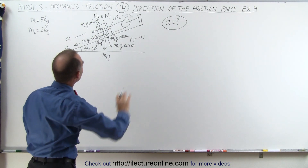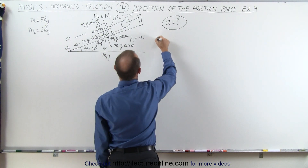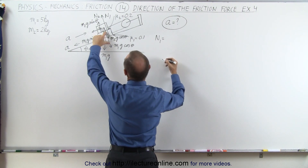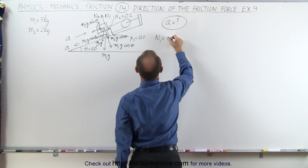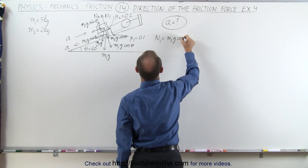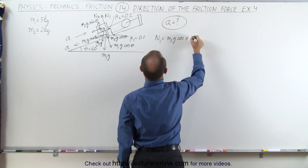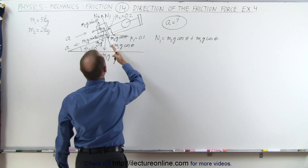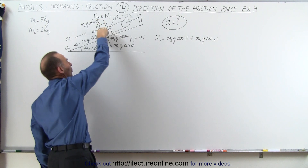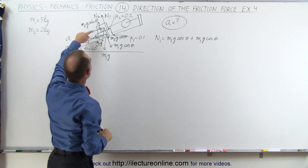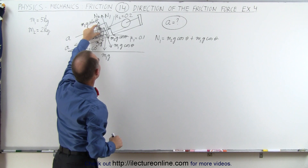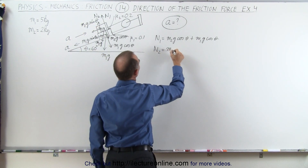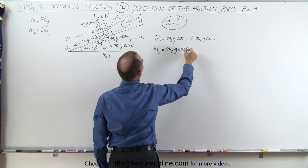That is getting crowded, so let me write down what these are. N1 is equal to the normal force, which is going to be the sum of these two forces right here — it's going to be m2g cosine of theta plus m1g times the cosine of theta. So N1 is the normal force as the result of both vertical components pushing against the surface. N2 is only going to be caused by the vertical component of m2, so N2 is equal to m2g times the cosine of theta.